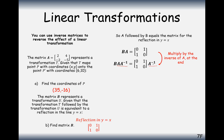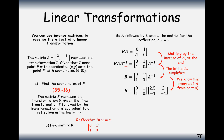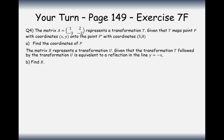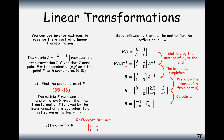Post-multiplying by inverse A on both sides: on the left, A times A⁻¹ cancels to leave just B on its own. On the right, the inverse of matrix A was [2.5, 2; -1, -1]. Multiplying those matrices together gives B as [-1, -1; 2.5, 2]. So that is the matrix we apply after matrix A, and when done in that order it is equivalent to a reflection in the Y equals X line.